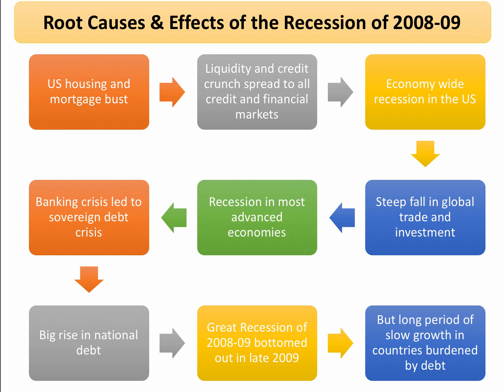Of course, in one case, Lehman Brothers were allowed to go bust. But the banking crisis led to a recession. Recession leads to a sovereign debt crisis because government tax revenues fall and government welfare spending and bailout spending goes up. The sovereign debt crisis leads to a big rise in national debt. Eventually the recession bottomed out, but we've had nearly a decade where governments in many countries have been trying to deal with and adjust to a higher level of fiscal debt and deficit and higher debts.